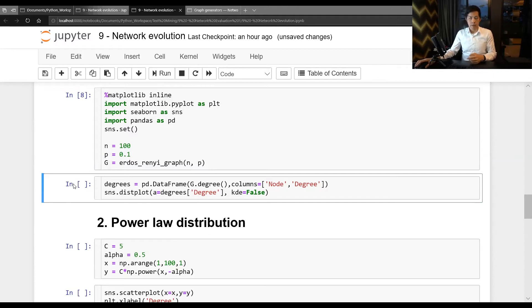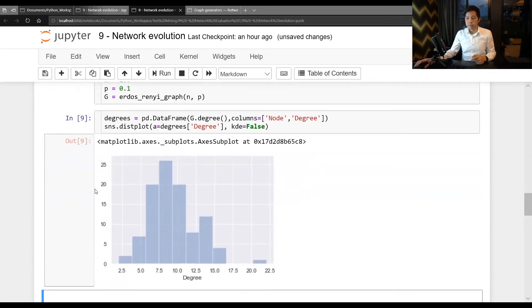I will use this to generate Erdos-Renyi, G, 100 and 0.1 just like earlier. And now I'm going to evaluate the degree of this distribution. And now you see this. This is a distribution of the degree.